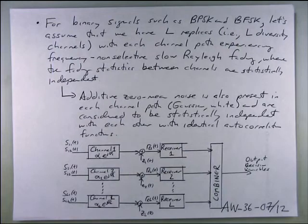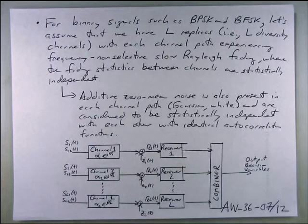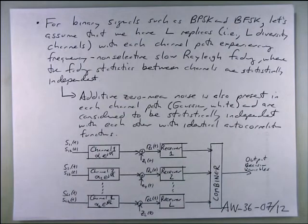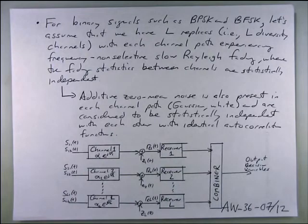There's also spatial multiplexing. If your channels are uncorrelated, you can transmit unique data down every one of those paths to maximize throughput. Alternatively, you can code across all those diverse paths such that if one is destroyed, you can recover most information from the other L−1 paths. Designing such a coder is no longer a research question.